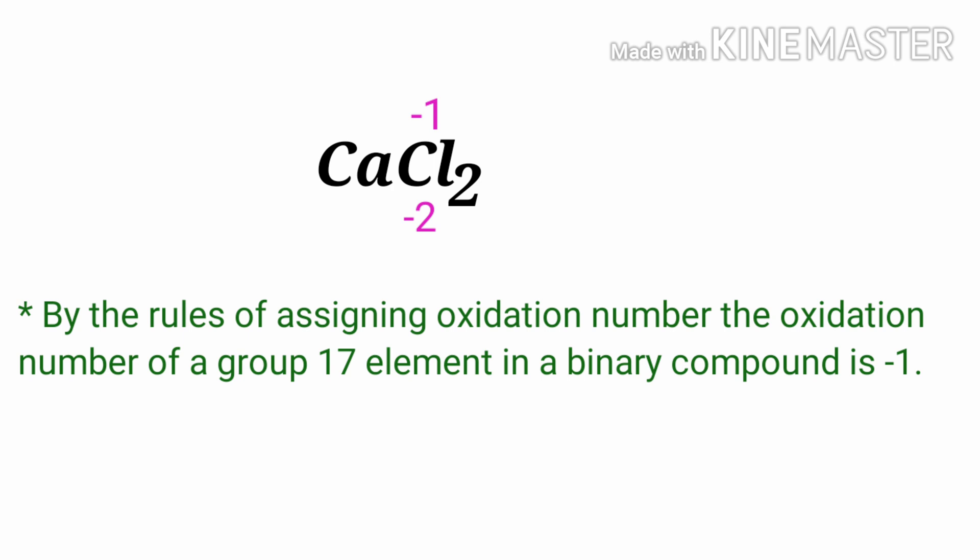As per rule, in a neutral compound, the sum of the oxidation numbers of atoms is equal to zero. The numbers along the bottom must add up to zero, so the number under Ca must be plus two.